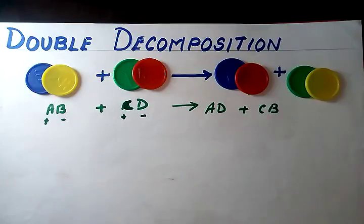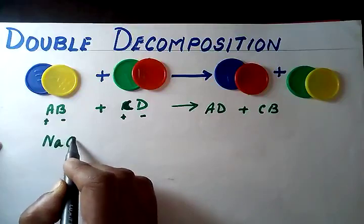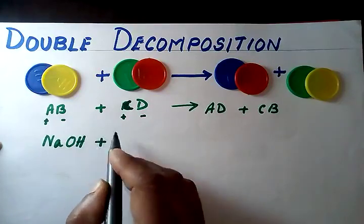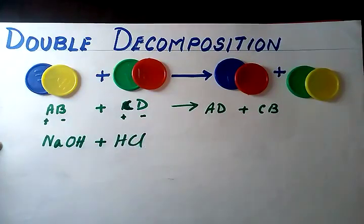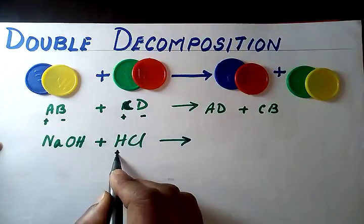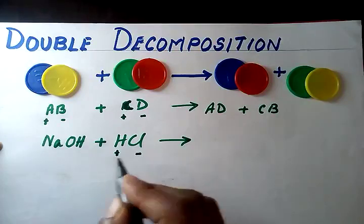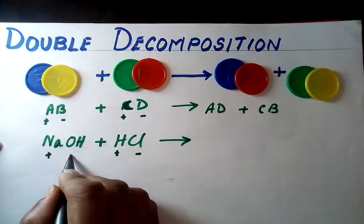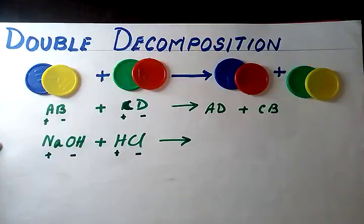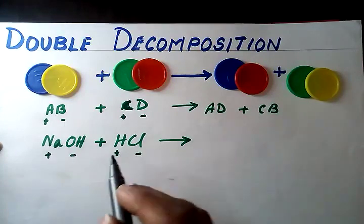You have sodium hydroxide made to react with hydrochloric acid. Hydrogen is positive cation, chlorine is anion. Sodium is cation, hydroxyl is anion. So they exchange.